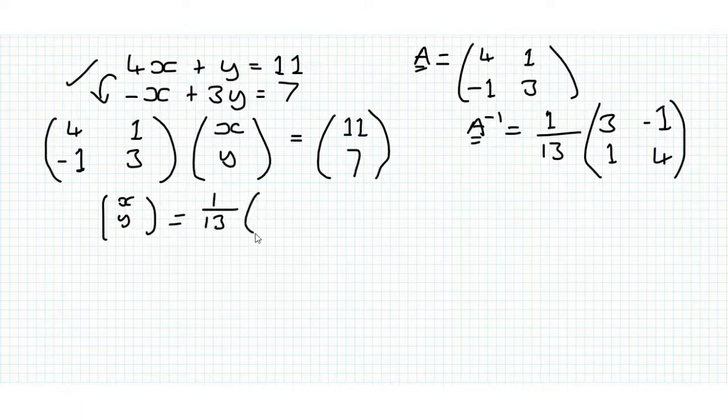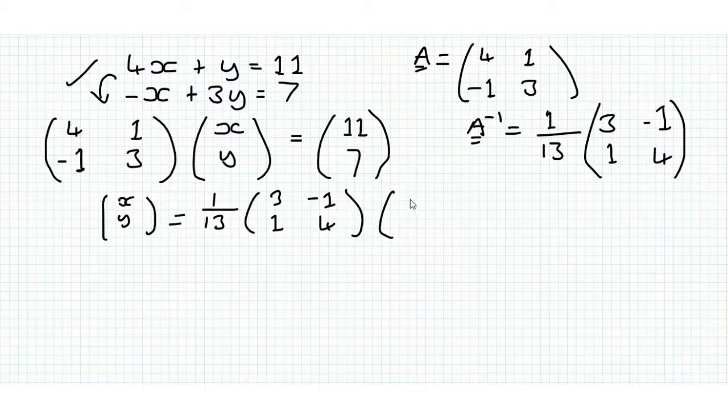So we get 1 over 13, 3, minus 1, 1, 4, by 11, and then 7.